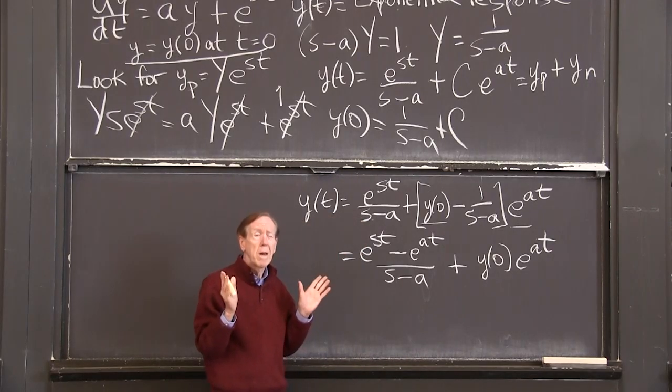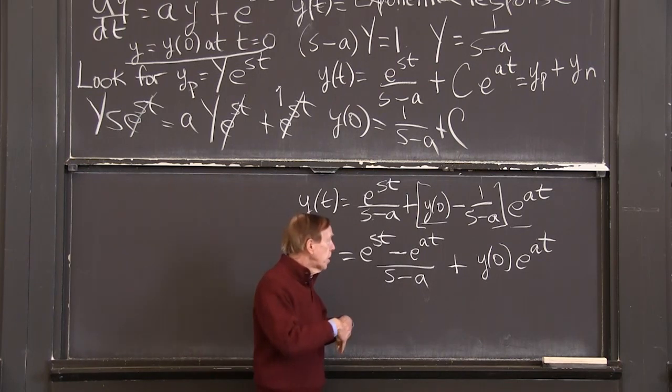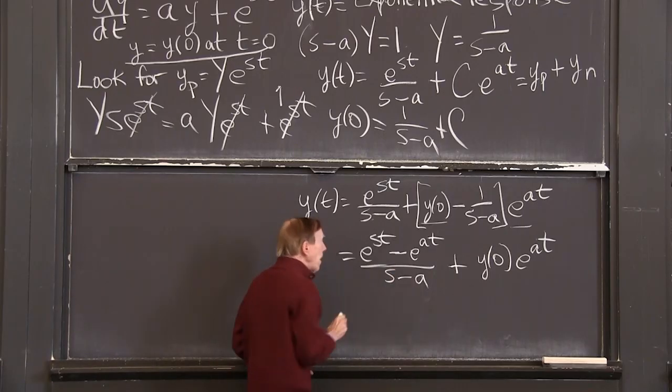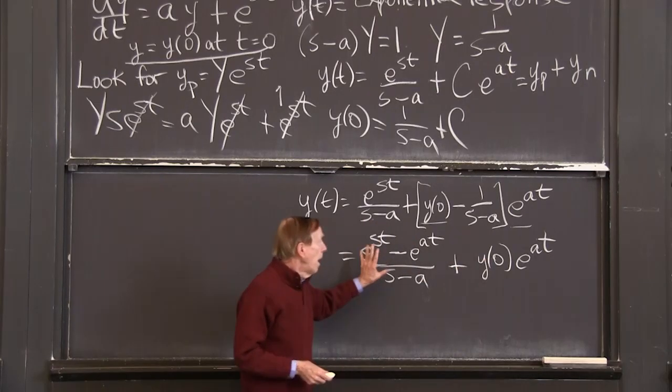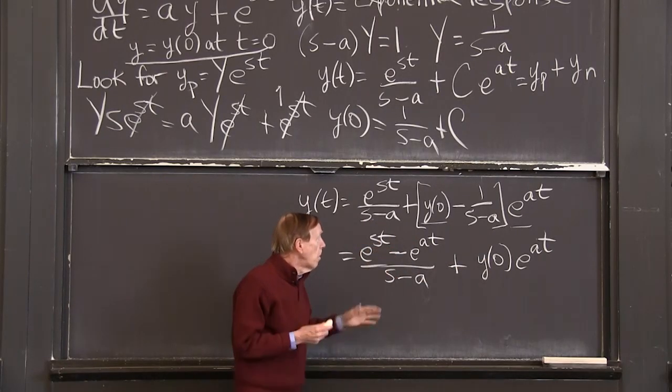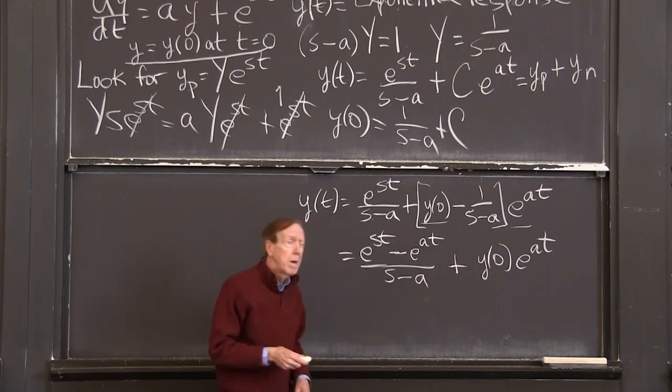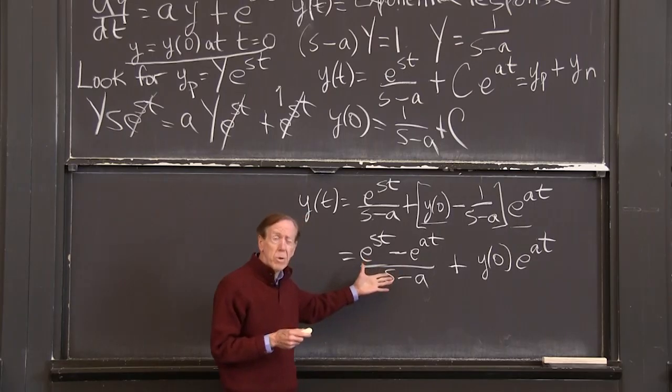This is the part growing out of the initial deposit. I'm using, again, money in a bank with additional deposits e^(st). And this is the part coming from those later deposits: initial part and the part coming from there. So this is, again, a null solution, a multiple of e^(at). This is another particular solution.